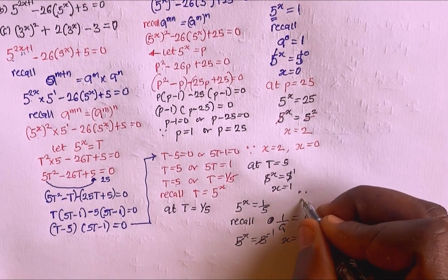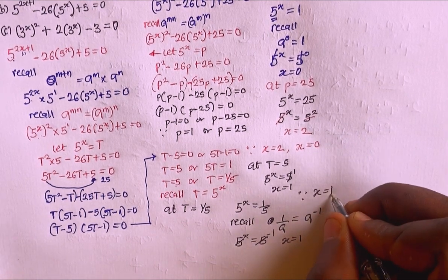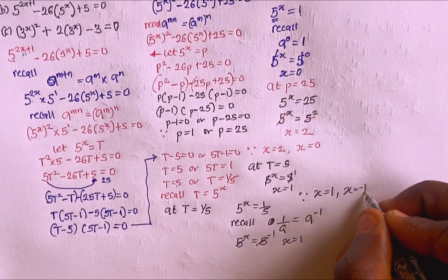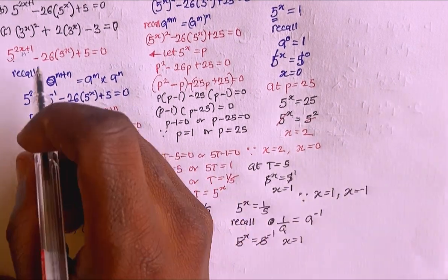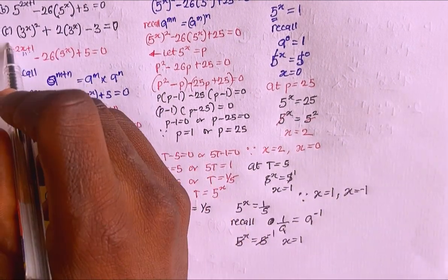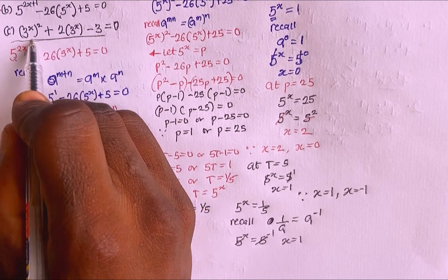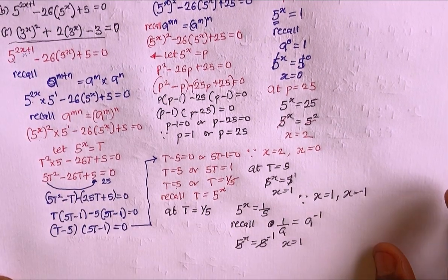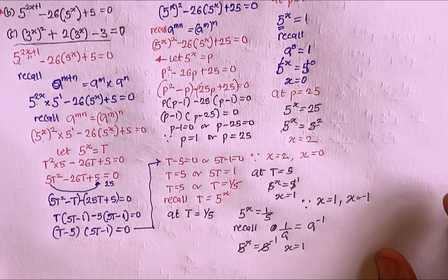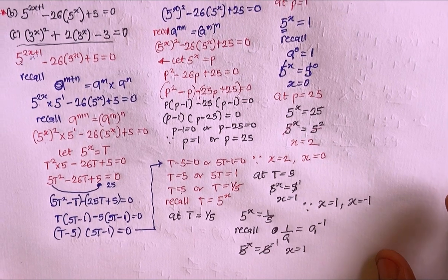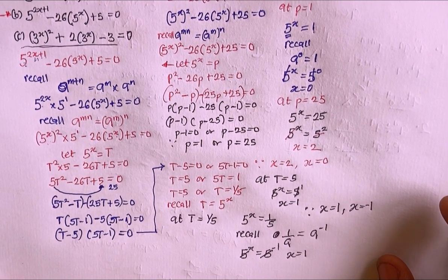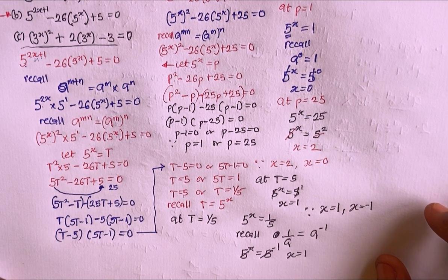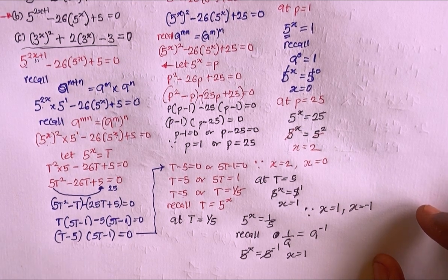Therefore x equals 1 and x equals −1 for the second equation. Go ahead and solve the third one and drop your answer in the comment box below. If you enjoyed this video, give it a thumbs up, share with your friends — thanks for watching.